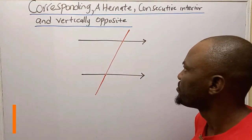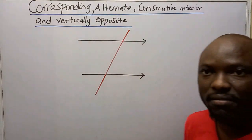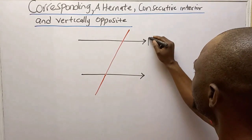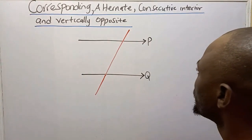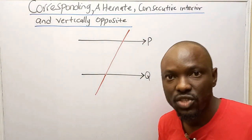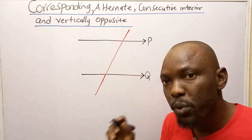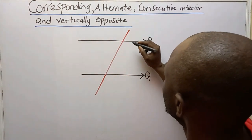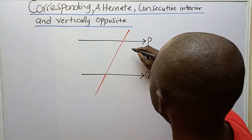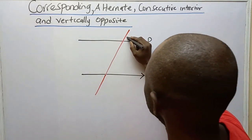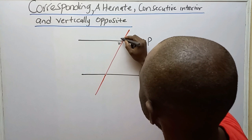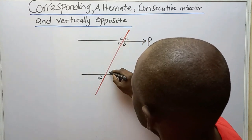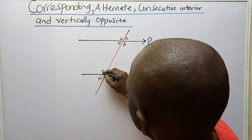If you look at what we have on the board, we have parallel lines. I can label them P and Q, and I have a transversal. A transversal is a line that goes through parallel lines, and I can label all the angles within and outside the parallel lines. I'll say A, B, C, D, and then W, X, Y and Z.